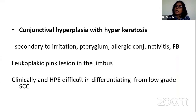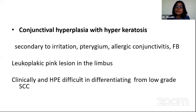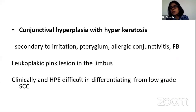Conjunctival hyperplasia and hyperkeratosis is something we see pretty commonly in practice, secondary to some kind of irritation such as pterygium or allergic conjunctivitis. They usually present as a leukoplakic pink lesion at the limbus. Clinically and histopathologically, it is rather difficult to differentiate from low-grade squamous cell carcinoma, which is why it is prudent to watch these patients at close quarters.